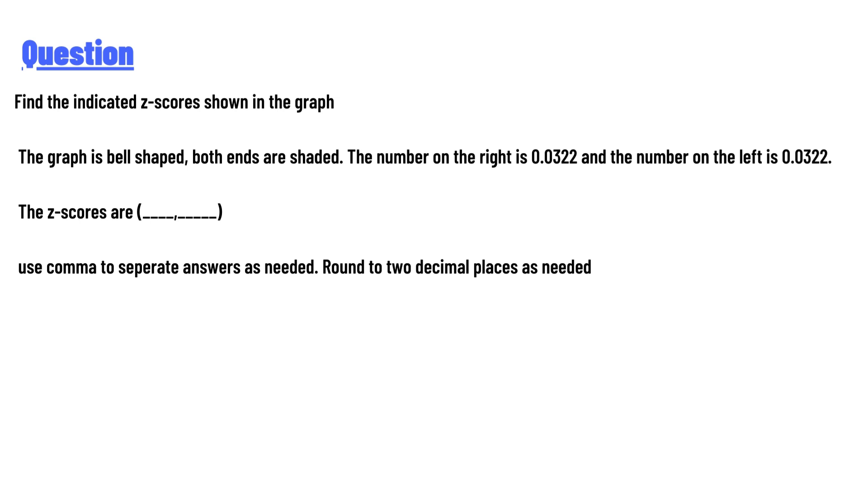The graph is bell-shaped, both ends are shaded. The number on the right is 0.0322 and the number on the left is 0.0322. The z-scores are: use comma to separate answers as needed, round to two decimal places as needed.